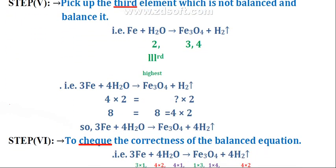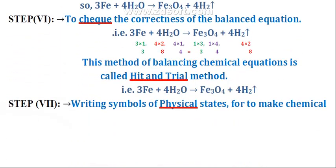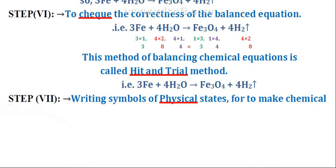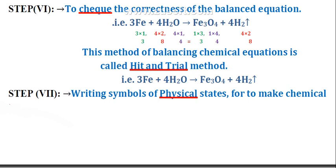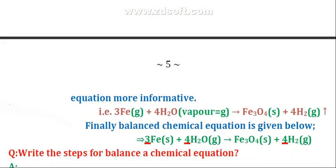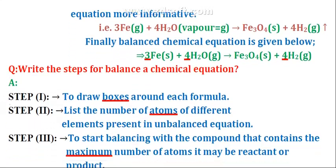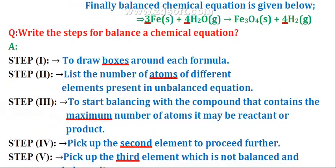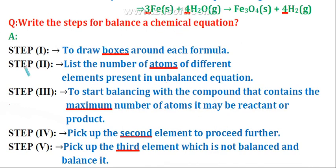Step five: pick up the third element which is not balanced and balance it. Step six: check the correctness of the balanced equation — in both sides, the number of elements should be equal. This balancing method is called the hit and trial method. Step seven: write the physical state so that the chemical equation will be more informative.